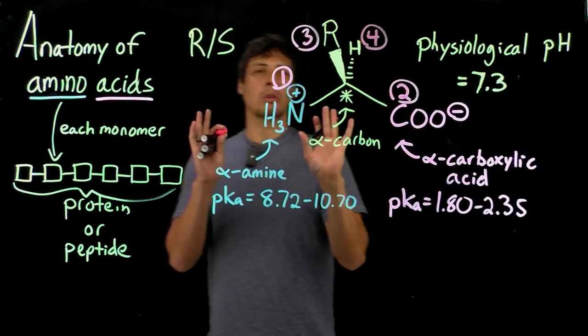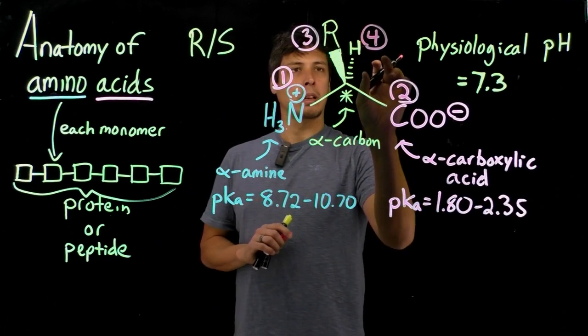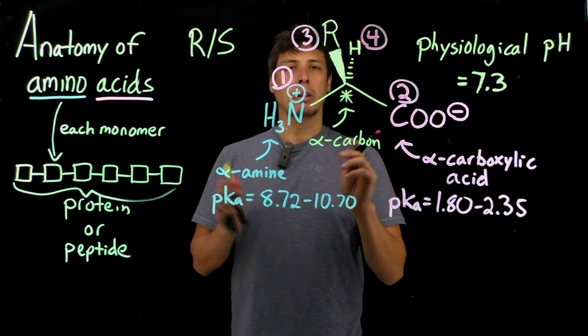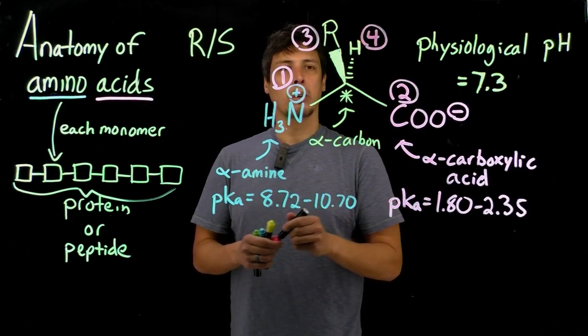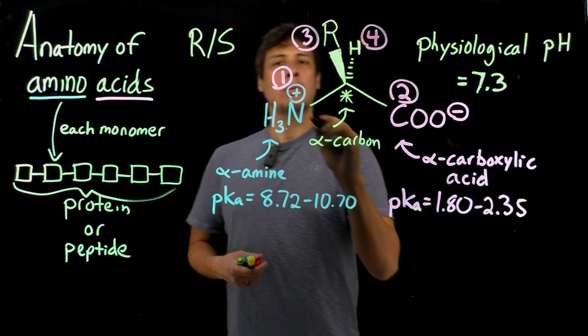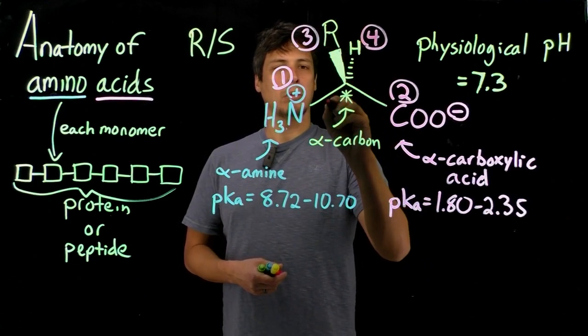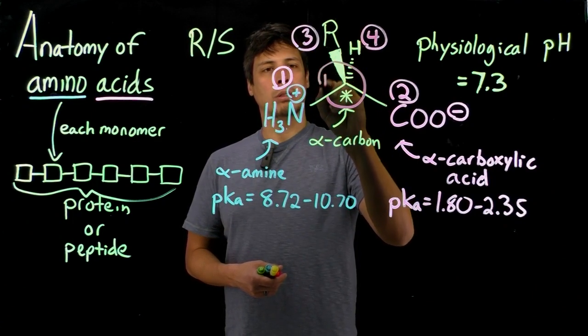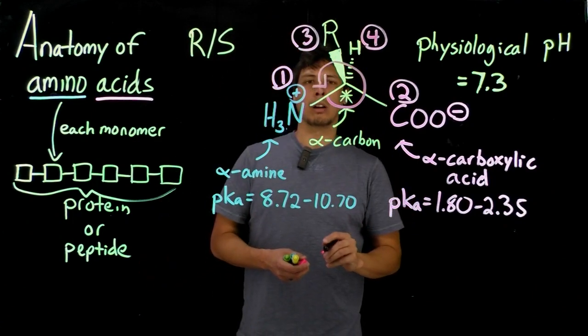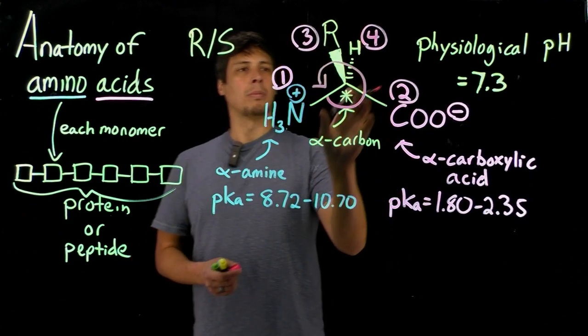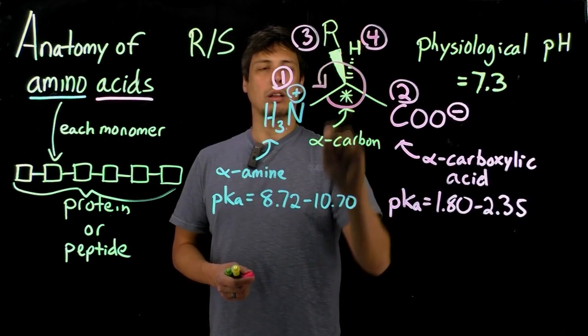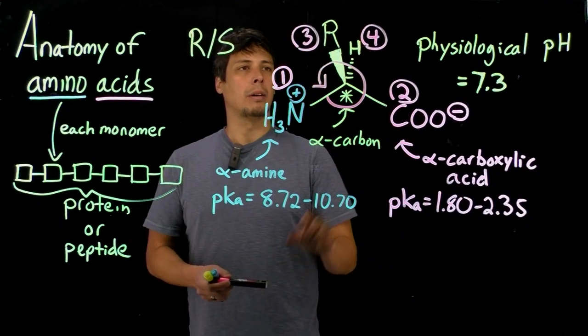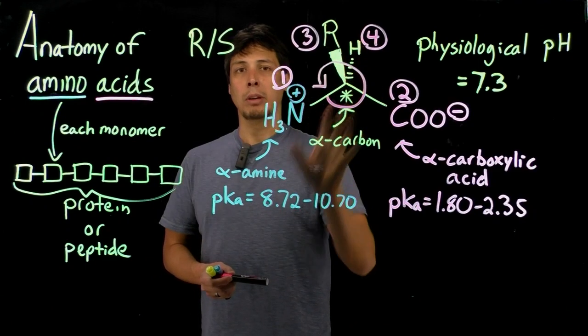Okay, so remember we want to turn our lowest priority away from us. So in this case, that's the hydrogen, and I've already fortunately drawn the molecule, the amino acid, so that the hydrogen is pointed away from us. Now we just draw a circle from one to two to three. And the direction of the circle will tell us whether we have R or S stereoconfiguration. So, for this, we have a counterclockwise circle. So, this is going to have an S stereoconfiguration for amino acids.